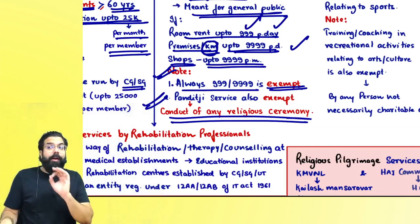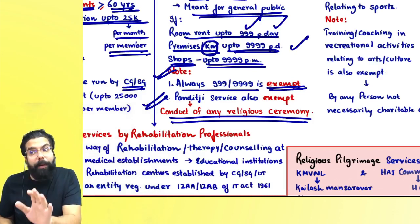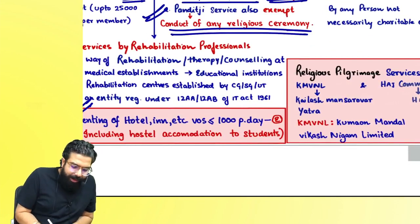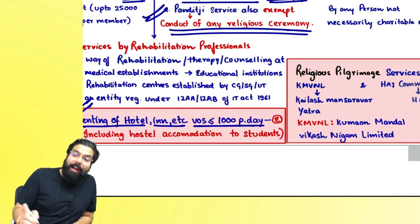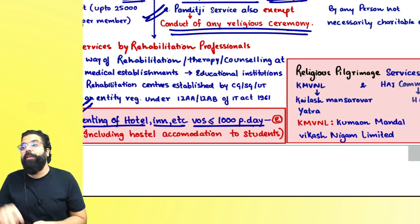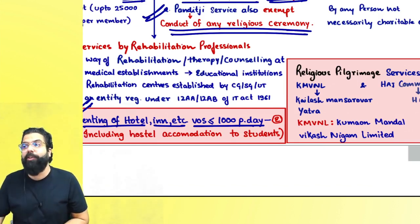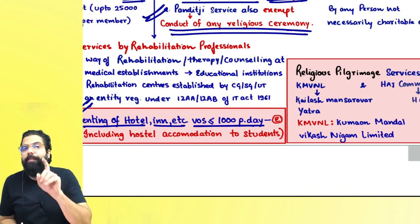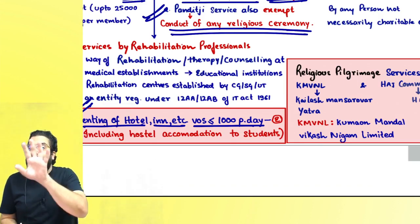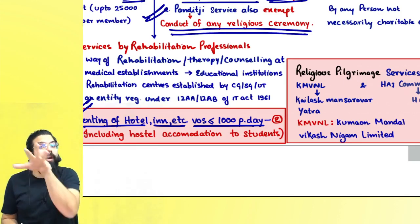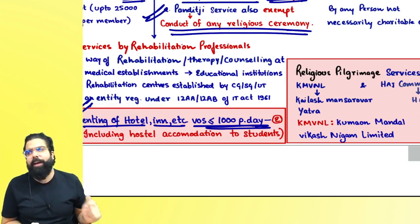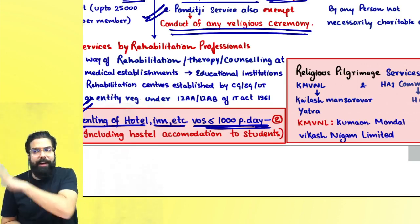In case of a temple, 9,999 is exempted. But in case of a hotel or hostel, renting with a value of supply up to Rs. 1,000 per day is exempted — because in a hotel there is no hundi. So the government exempts only full 1,000 rupees. For both hotel and hostel, it is Rs. 1,000 per day which has been exempted.